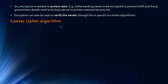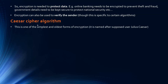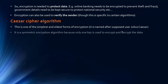You need to know about one form of encryption — one algorithm that can encrypt data — and that is the Caesar cipher. This is one of the simplest and oldest forms of encryption. The name comes from Julius Caesar, the Roman general, which gives you an idea of its age. Apparently he used it to send secret messages. It's something called a symmetric encryption algorithm.